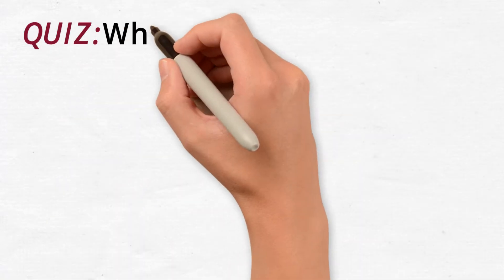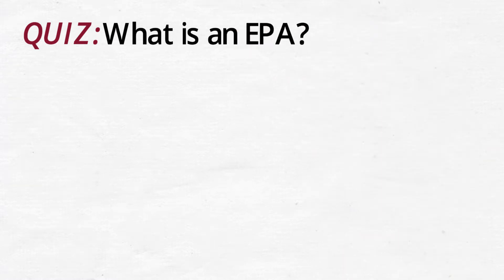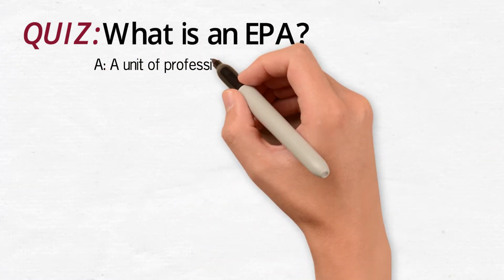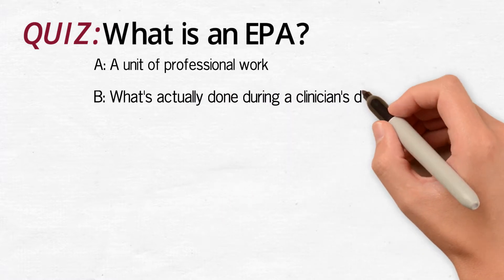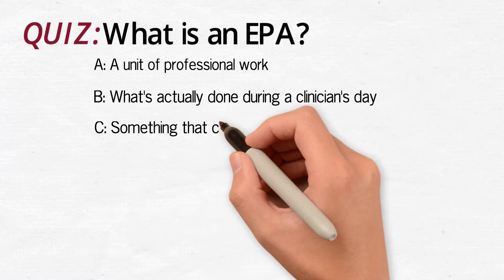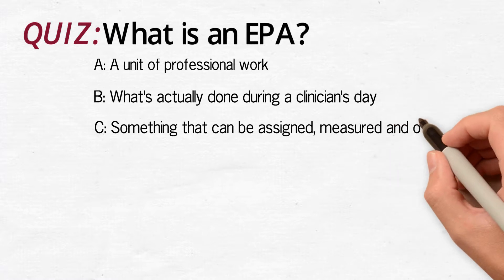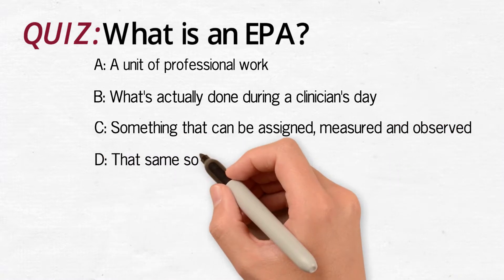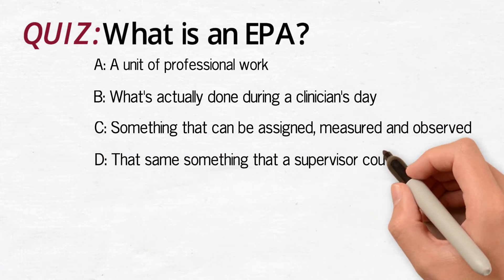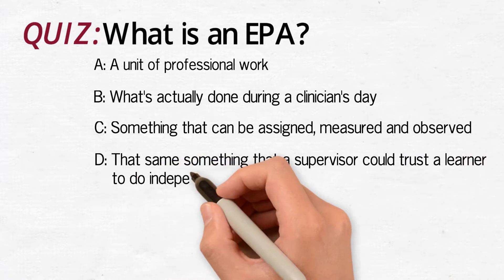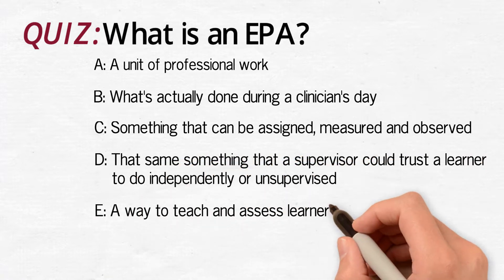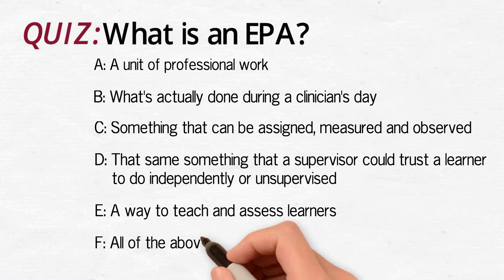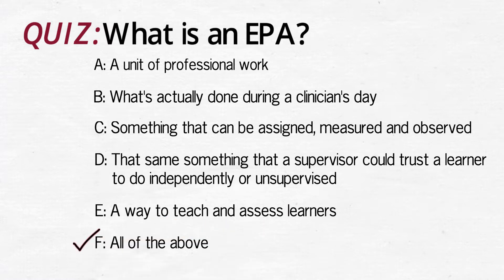Here's a multiple choice question: What is an EPA? A. A unit of professional work. B. What's actually done during a clinician's day. C. Something that can be assigned, measured, and observed. D. Something that a supervisor can trust a learner to do independently or unsupervised. E. A way to teach and assess learners. Or F. All of the above. It's no surprise that each of these describes an EPA.